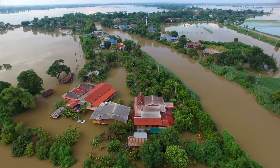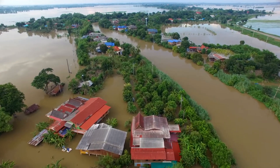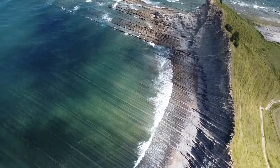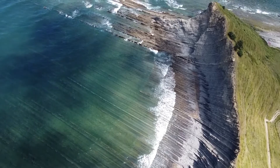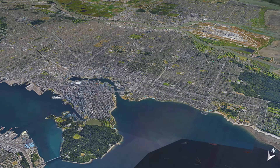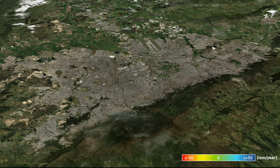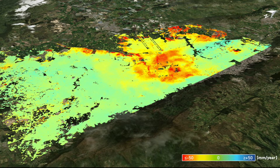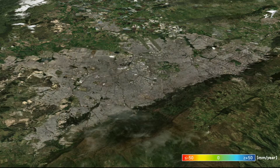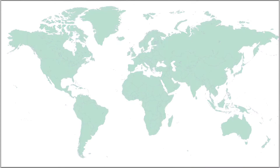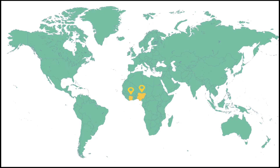Finally, extreme weather events cause frequent flood damage, landslides, and coastal erosion. Resilient cities can accurately map these risks, and plan and minimise exposure to populations and infrastructure. The initiative is focused on specific countries, with more to be added in the future.